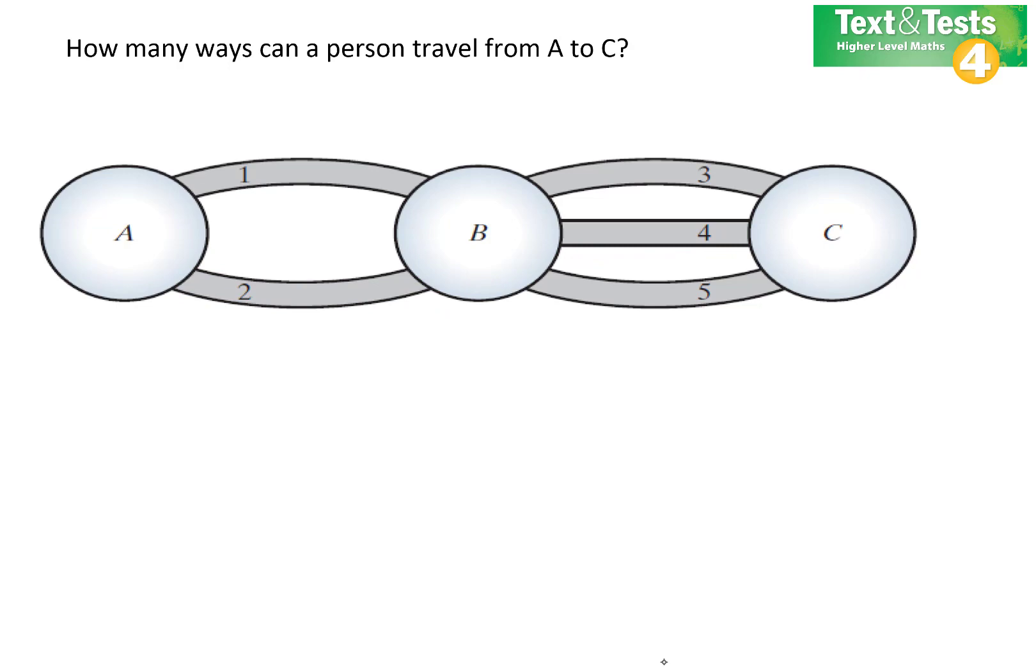Well, we could create a sample space for this to see what the options are, or a tree diagram. So in the first choice, you could have taken either road 1 or road 2. And having taken road 1, you could then either take road 3, 4, or 5.